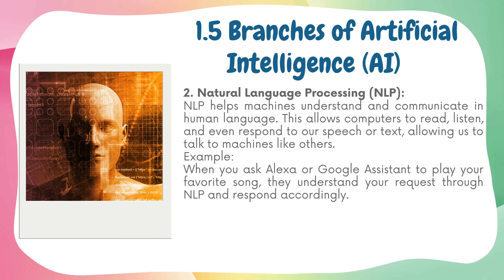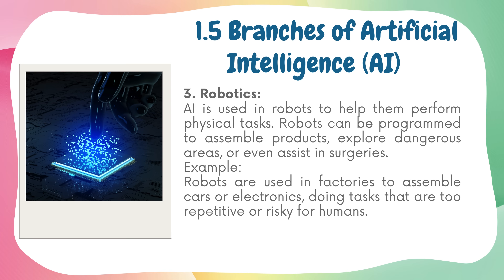Natural Language Processing, or NLP, helps machines understand and communicate in human language. This allows computers to read, listen, and even respond to our speech or text. Example: when you ask Alexa or Google Assistant to play your favorite song, they understand your request through NLP and respond accordingly. Robotics: AI is used in robots to help them perform physical tasks. Robots can be programmed to assemble products, explore dangerous areas, or even assist in surgeries. Example: robots are used in factories to assemble cars or electronics, doing tasks that are too repetitive or risky for humans.